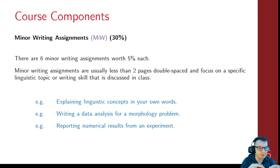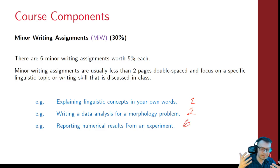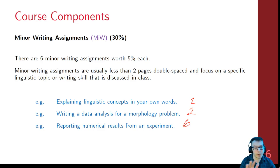The minor writing assignments — there are six for a total of 30% — each focus on a specific skill. The first one has you explain a linguistic concept in your own words. For number two, you'll write a data analysis of a morphology problem. One of the last ones, number six, has you report statistics — I'll give you the statistics in advance, but you'll put them together into a write-up. I'm giving you material that's already completed or near completed, so your focus is the writing aspect of it.